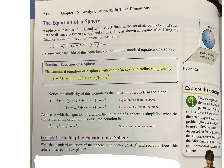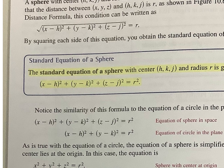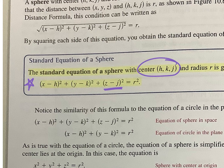Next, we have the equation of a sphere. It's the same as the equation of a circle, but we include z. So we have (x minus h) squared plus (y minus k) squared plus (z minus j) squared equals r squared. Our center is (h, k, j) and our radius is r.